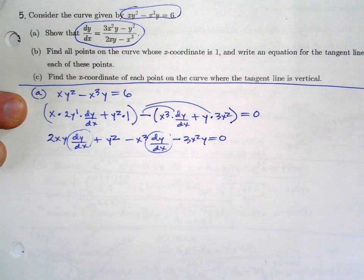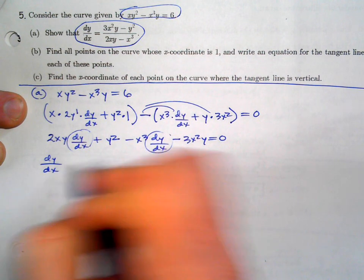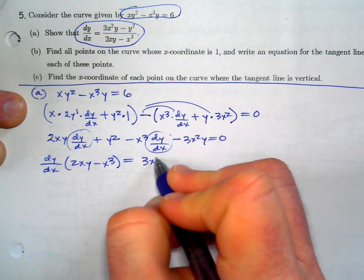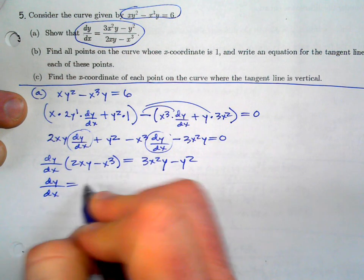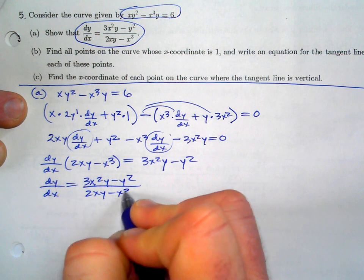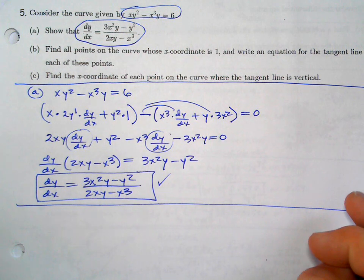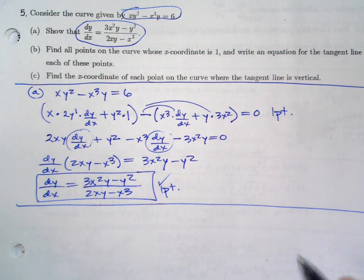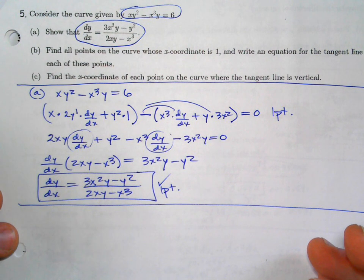Now isolate dy/dx: group the dy/dx terms, factor out dy/dx, and move the other terms to the other side. Dividing gives dy/dx = (3x²y − y²) / (2xy − x³). That matches the answer they gave. You get a point for correct implicit differentiation and a point for solving for dy/dx.